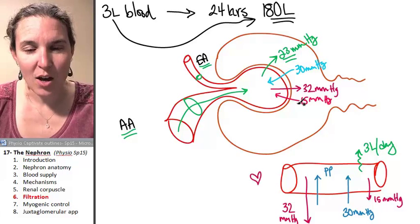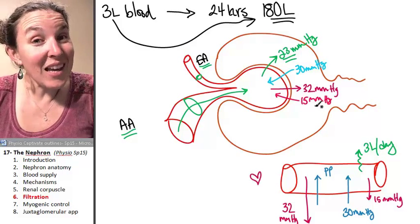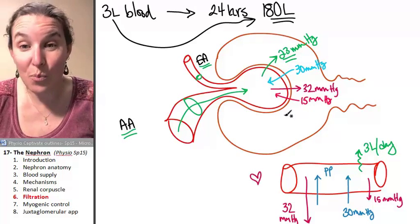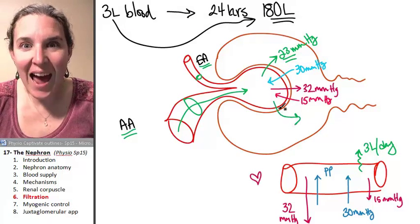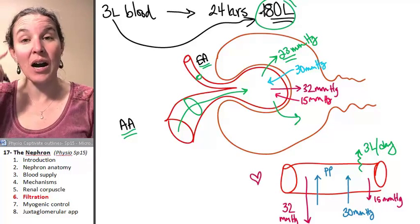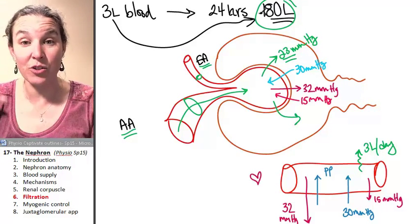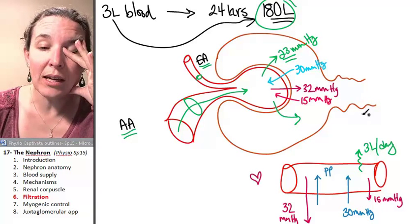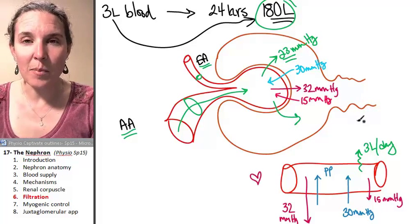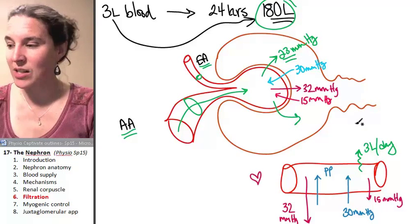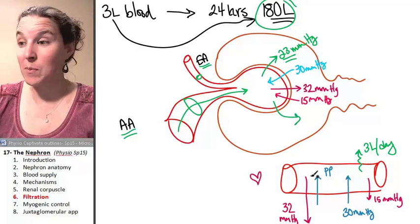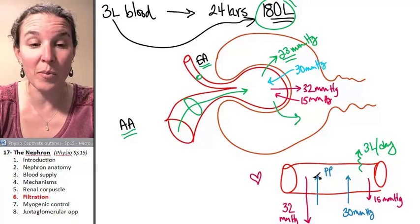Bottom line. We end up with about 10 millimeters of mercury of pressure pushing out. And the leakiness of the capillaries leads to 180 liters of filtration. Holy madness. This sets you up to appreciate and understand we better reabsorb that. And we're going to spend the next entire lecture talking about how we reabsorb it.